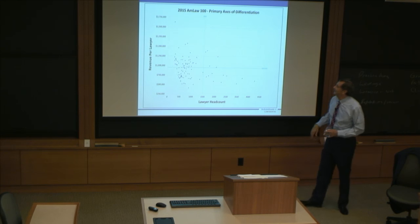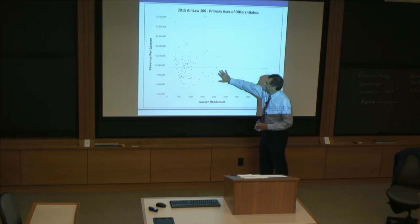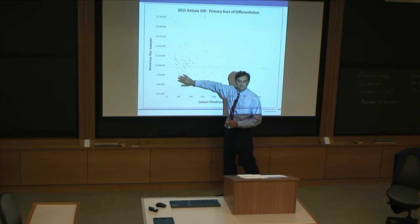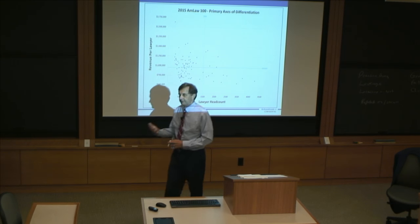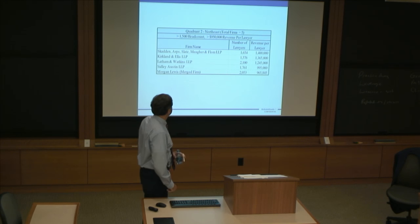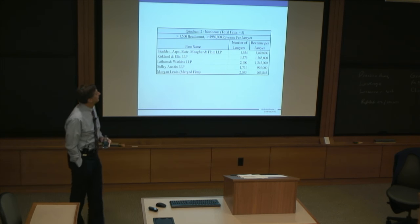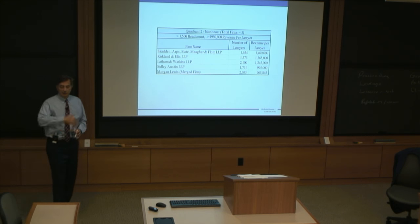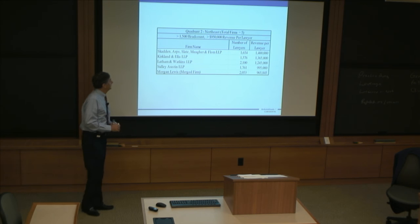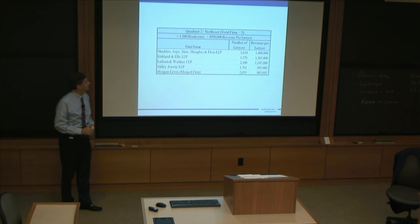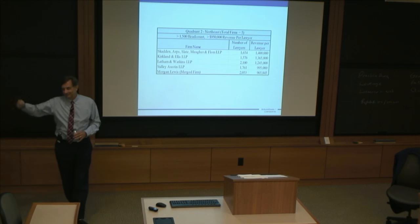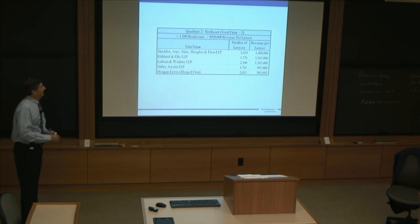If I look at the law firms here in this quadrant, do they look similar? And do they look different than the law firms over here and here and here? If you were a partner in one of these firms and I showed you the names, it would be very informative. And I'm going to do that right now. This is the northeast quadrant. This is a large law firm, more than 1,500, and your revenue per lawyer is up at $950. There's only five. Skadden, Kirkland, Latham, Sidley, and Morgan Lewis. They merged recently with Bingham, a Boston firm. You've heard of these firms? So this means they're really big, and the value they provide clients is very high.